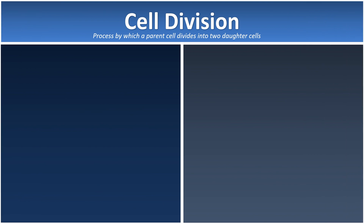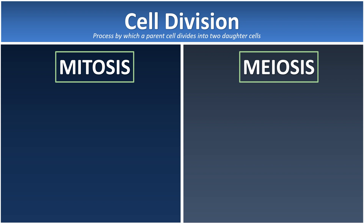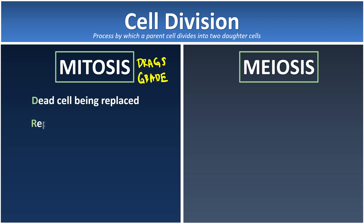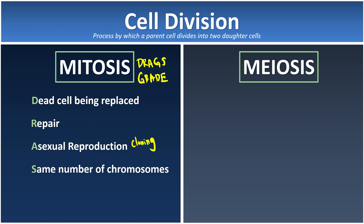Before we finish, let's look at the importance of mitosis and meiosis. For mitosis, remember the acronym DRAGS — or you can think of GRADE. It helps us replace dead cells and repair damaged cells. It is also a very important process in asexual reproduction where cloning occurs, allowing organisms to regenerate without a partner. Since cloning generates a new organism that is identical, this is why the daughter cell has the same number of chromosomes. Finally, it supports growth for the embryo or any living cells — this is why you are tall or even taller than your parents.